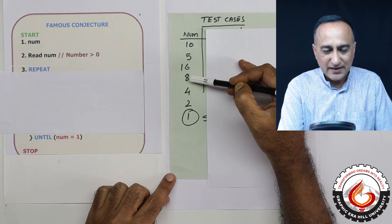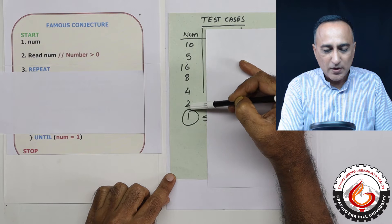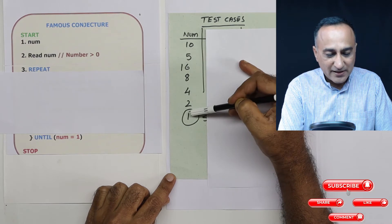After 16, it becomes 8. After 8, it becomes 4. After 4, it becomes 2 and then it becomes 1. So you have seen given any number, finally it reaches 1.